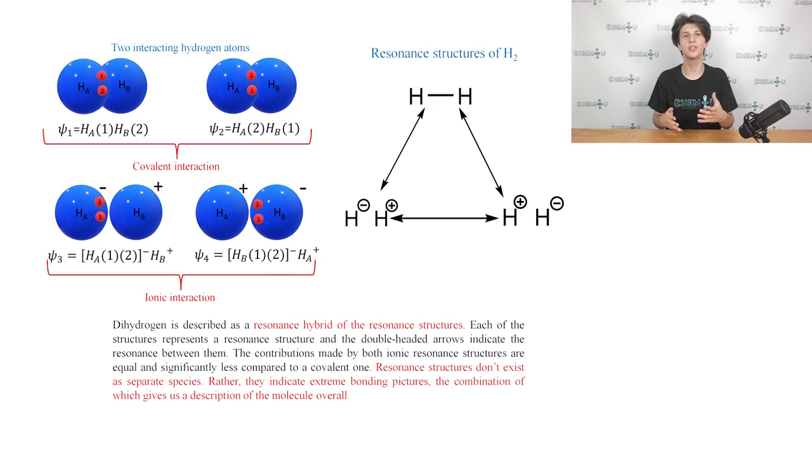Let's take a look at the structures that are described by wave functions ψ-covalent and ψ-ionic. They are depicted on the slide right now. The hydrogen is described as a resonance hybrid of these contributing resonance or canonical structures. Each of the structures on the slide represents a resonance structure and the double-headed arrows indicate the resonance between them. The contributions made by both ionic resonance structures are equal and significantly less compared to a covalent one. The term resonance hybrid is somewhat unclear but is too established to be changed. A crucial piece of information in regards to resonance structures is that they do not exist as separate species. Rather, they indicate extreme bonding pictures, the combination of which gives us a description of the molecule overall.